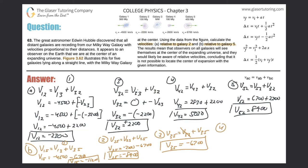Last, galaxy 4 relative to 5: velocity of 4 relative to 5 equals velocity of 4 relative to 3 plus velocity of 3 relative to 5, which is 2830 minus 6700, giving negative 3870. Those are all the relative velocities.